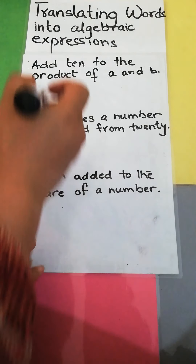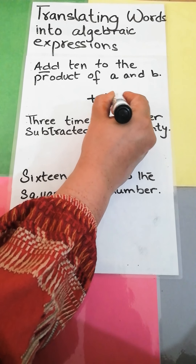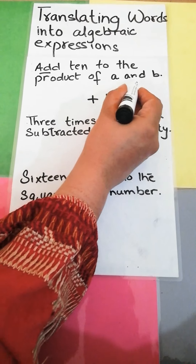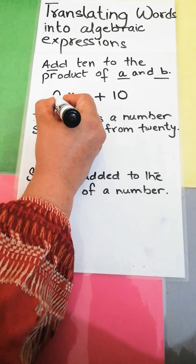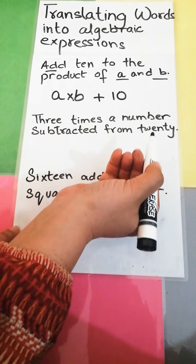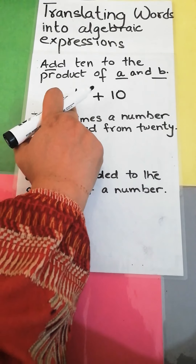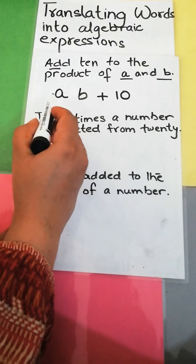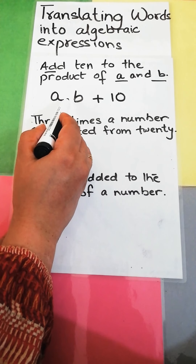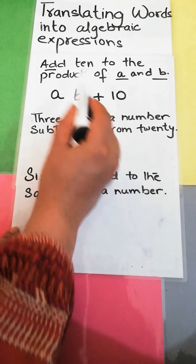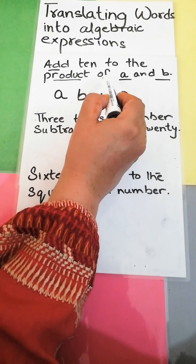Add ten to the product of a and b. Here the letters a and b are given. The product of a and b is written as ab — no multiplication sign needed, it is understood that multiplication is between them. Then we add ten, giving us ab + 10.